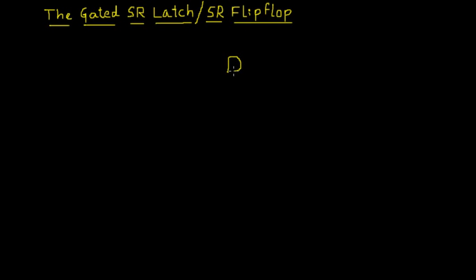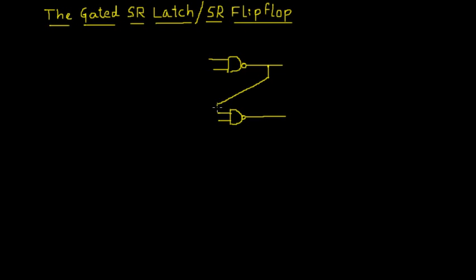First let me draw the logic diagram of the gated SR latch. I will draw two NAND gates — this is our first NAND gate with two inputs and an output, and similarly one more NAND gate which again has two inputs and an output. Now I will cross-couple these two NAND gates, meaning the output of the first NAND gate is connected to the input of the second NAND gate.